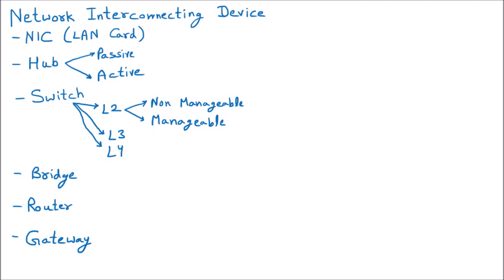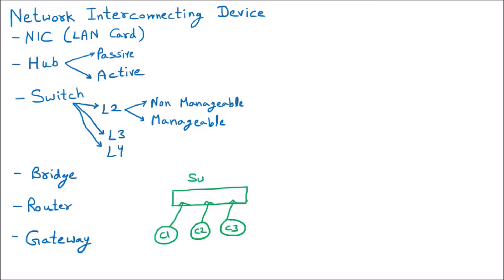Now let us suppose that we are having a switch with three ports. There are three computers which are connected — let us suppose C1, C2, and C3 — and we are saying it is a switch.